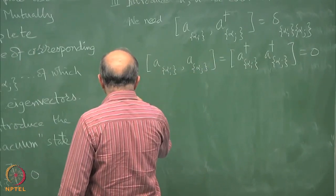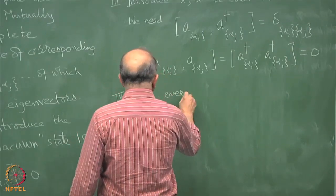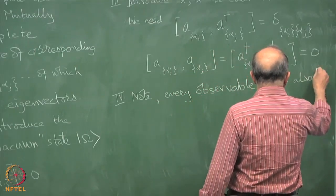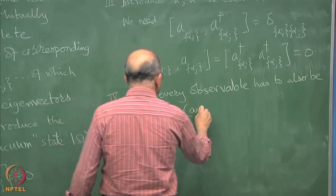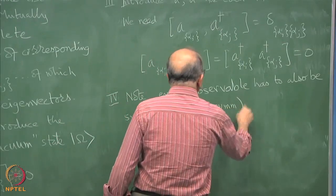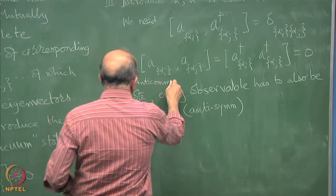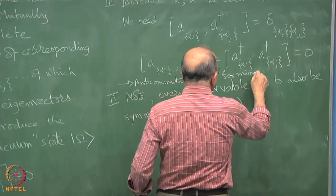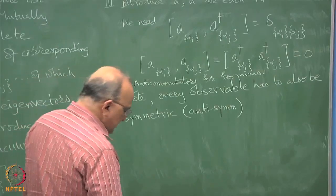Thus, so finally, we observe for and of course, anti commutators for fermions. And note that the observable also is symmetric in the in terms of particles.